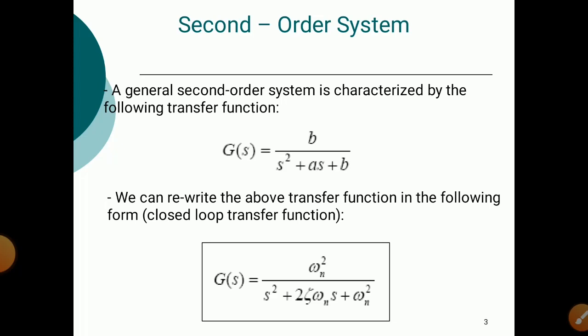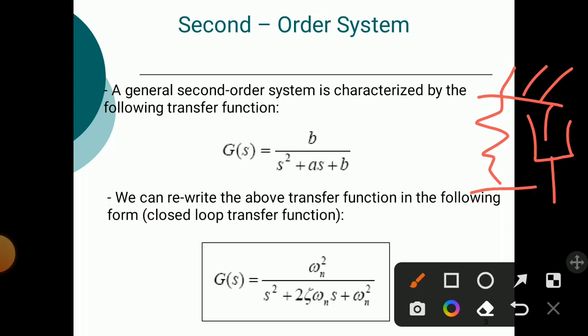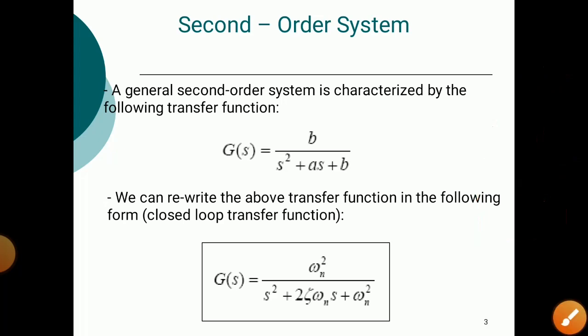We can rewrite the above transfer function in the following closed-loop form: G(s) = ωn² / (s² + 2ζωn·s + ωn²). Here ωn is the natural frequency of the system and ζ is the damping factor. A system with a spring, damper, and mass attached is called a damping system, and from such a system we get this transfer function.